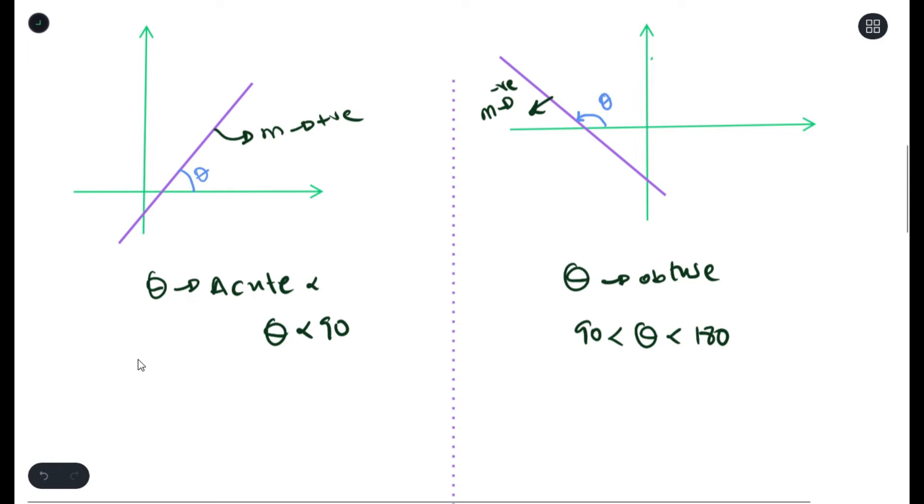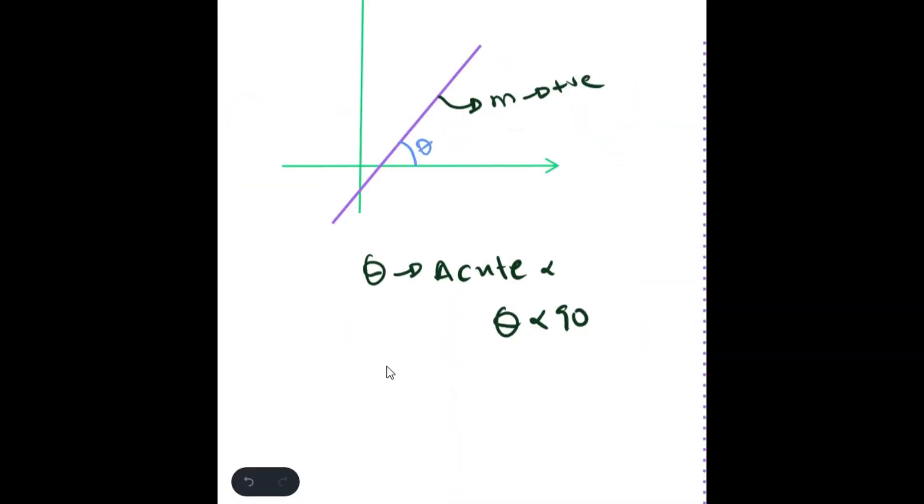When the gradient is positive, to calculate your angle, you have M is equals to tan theta. All you just have to do is get the inverse function of your gradient. And the answer you would definitely get would be between 0 and 90.